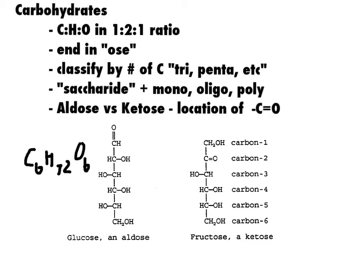You can see they obviously have very different structures, even though they have the same number of carbons, hydrogens, and oxygens — and that makes them isomers. So molecules with the same molecular formula, the same recipe, but they end up with different structures.